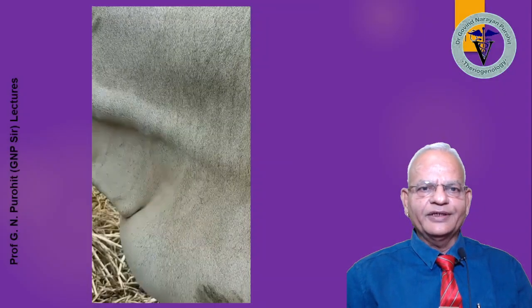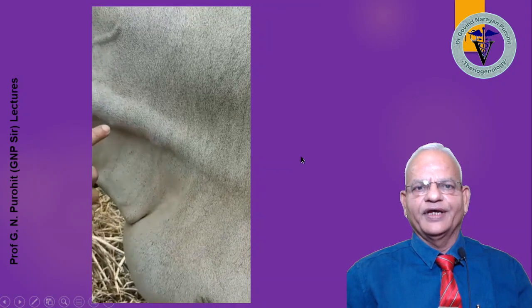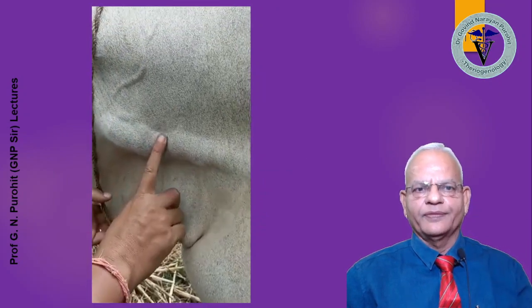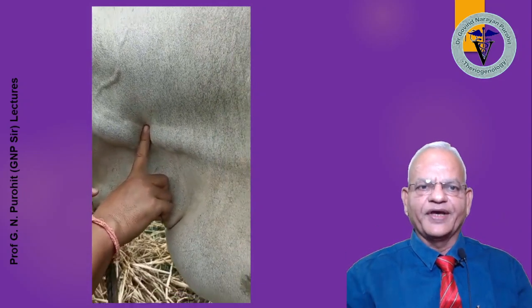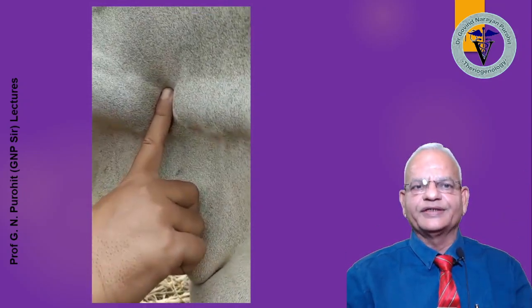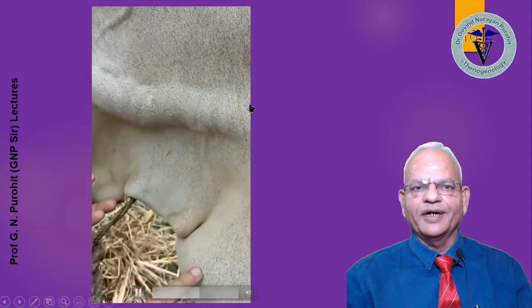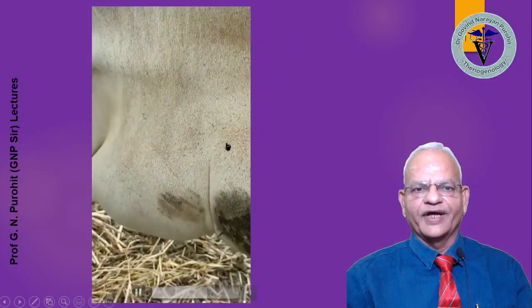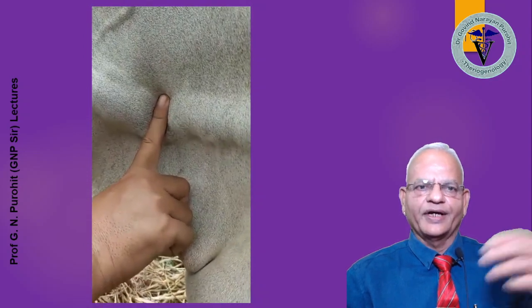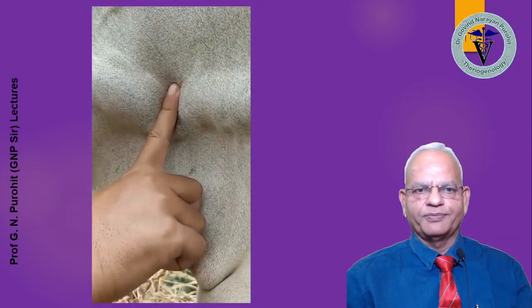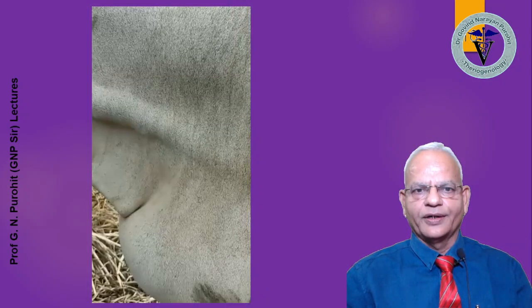Animals with traumatic pericarditis may also have a prominent jugular vein, or what you call jugular stasis. When we press it with a finger, the jugular raises immediately. This cow is also having a huge brisket edema and the jugular vein has become very prominent — when we press it, the vein raises spontaneously and remains raised.